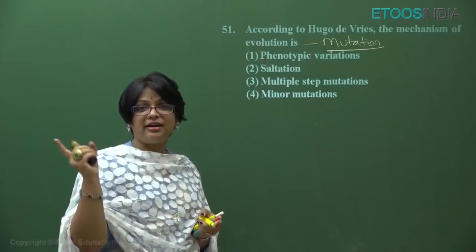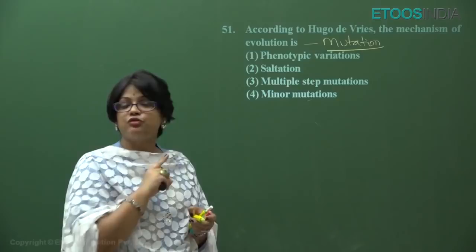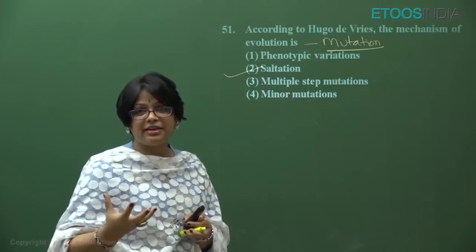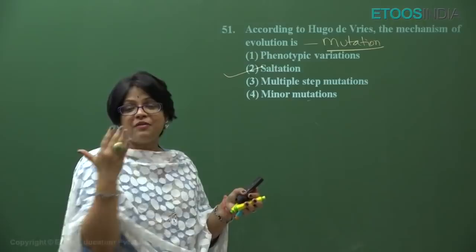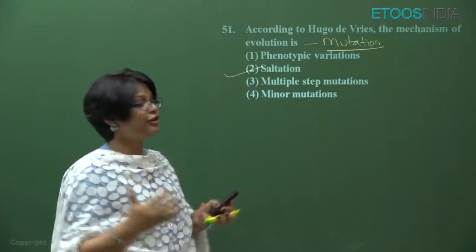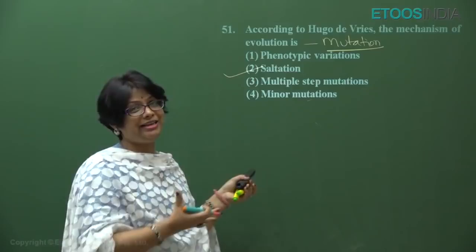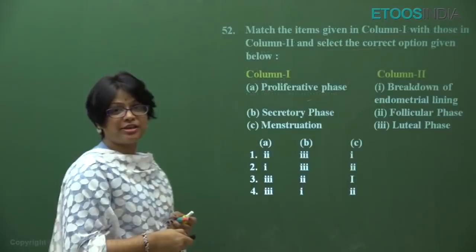Phenotypic variations were proposed by Lamarck as inheritance of acquired characters, which is Lamarckism. Hugo de Vries said evolution is due to saltation — mutations are called saltation. Multi-step mutations refer to the minor variations Darwin spoke of, not what Hugo de Vries proposed. It is large, random, directionless single-step mutations called saltations responsible for speciation. Answer is option two.